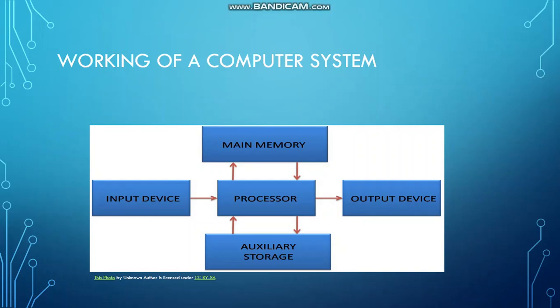The next part is a processor. Processor means the brain of the computer which processes everything. The third part is main memory, also known as primary memory. And the fourth one is auxiliary storage, also known as secondary storage or secondary memory. For example, hard disk, pen drive, flash drive — these all are secondary memory or auxiliary storage.